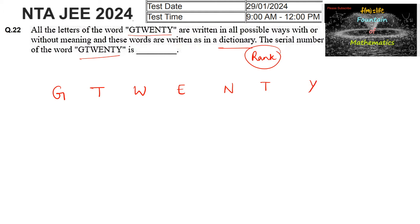Let's use a shortcut method. Let's position the letters according to alphabetical order. So we can say E comes first at position 1, then G at 2, then N at 3, then T at 4 — here two letters T are repeated — then W at 5, and last Y at 6.